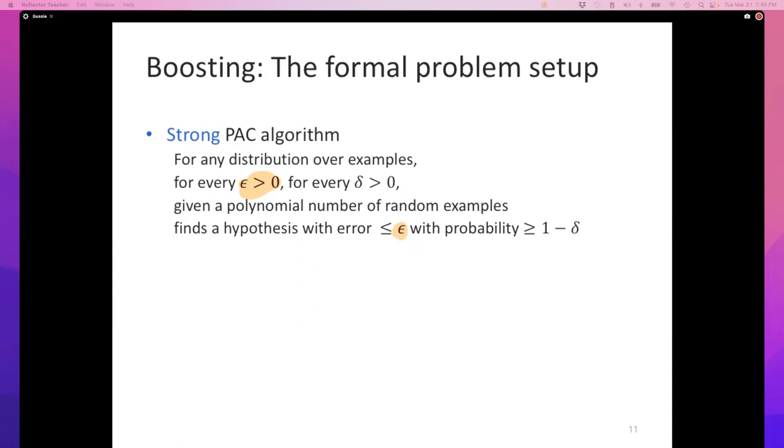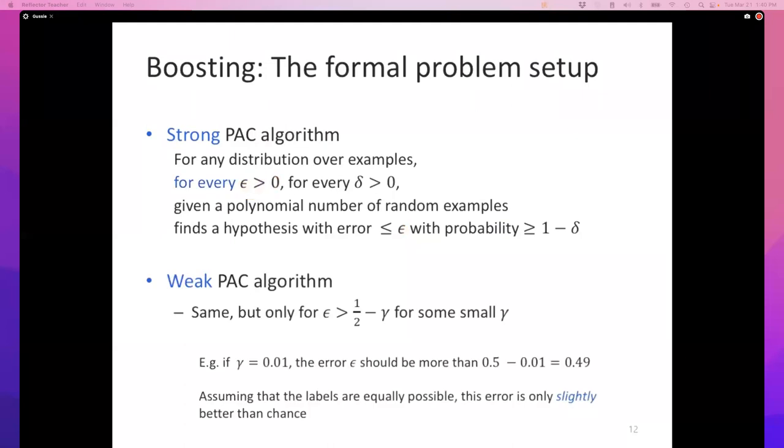Now let me introduce another idea, something called a weak PAC algorithm. The weak PAC algorithm is essentially this: it does the same thing but it does not operate for all possible errors. It does so only for error less than ½ - γ for some small γ.